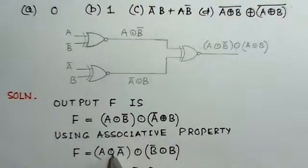So, we bring it here. This becomes A exclusive NOR A bar. Then, this B bar comes on this side. So, this is B bar exclusive NOR B.